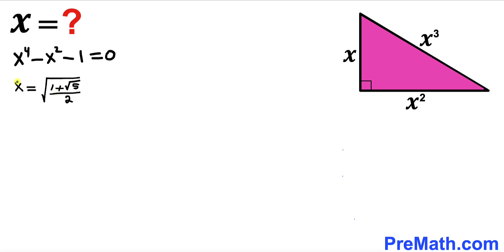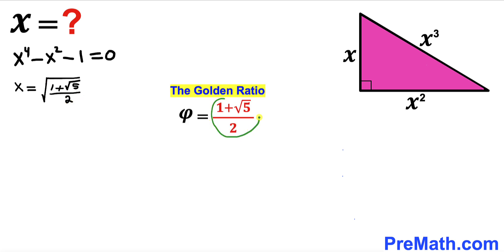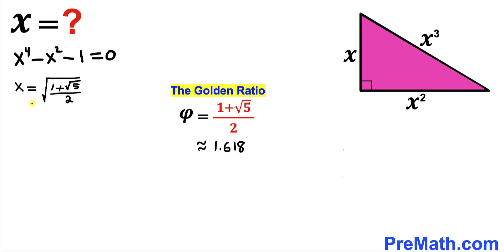We accept the first solution since its radicand is a positive number. So our x value is the square root of (1 plus square root of 5) divided by 2. Let's make an observation: the radicand (1 plus square root of 5) all over 2 is the special number called the golden ratio, represented by phi, and this number is approximately equal to 1.618.